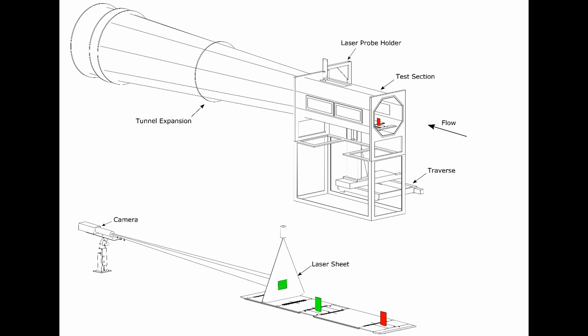Up the top, there comes a laser sheet down that's held by a laser probe that's on a traverse. The traverse allows the sheet to move forwards and backwards. This allows me to look at different sections of the airflow as it goes along.